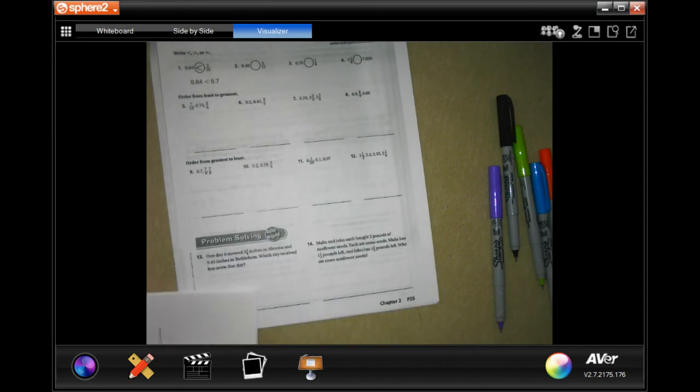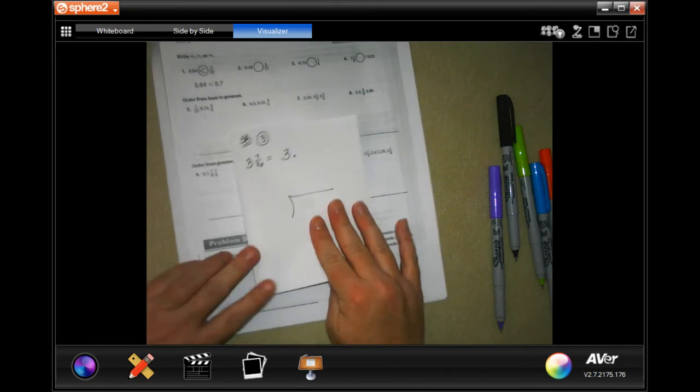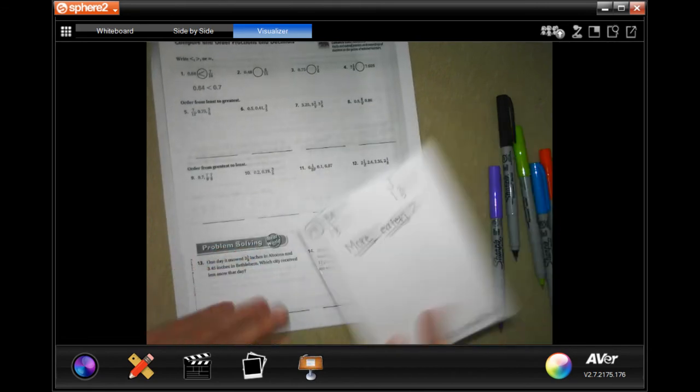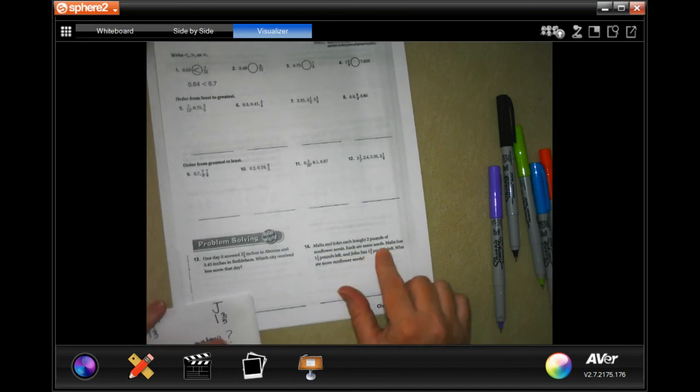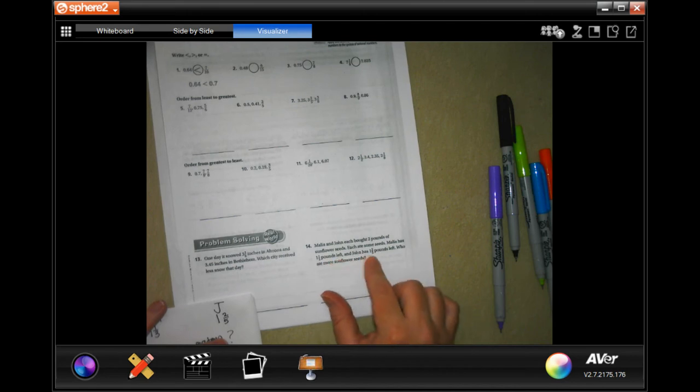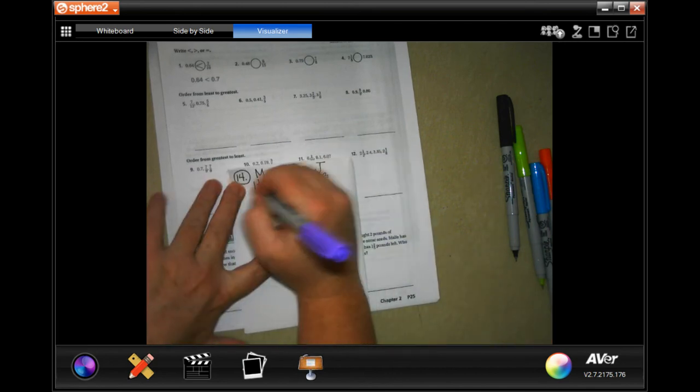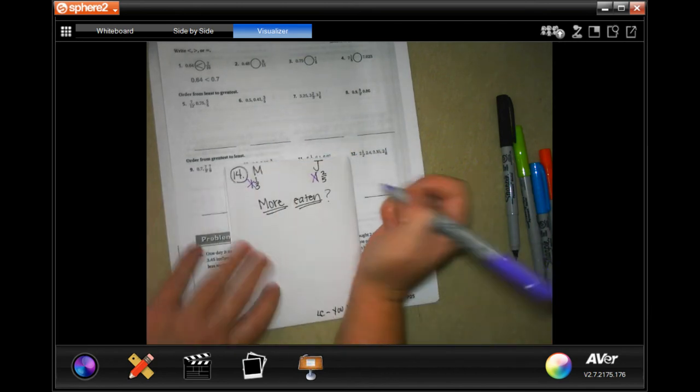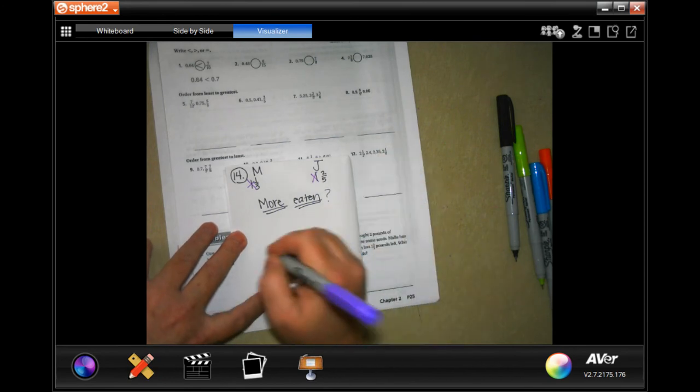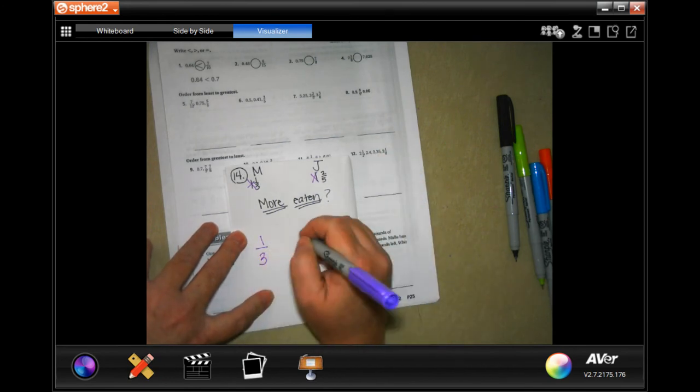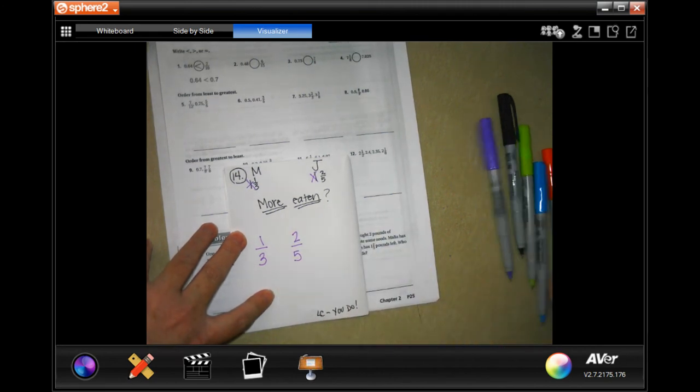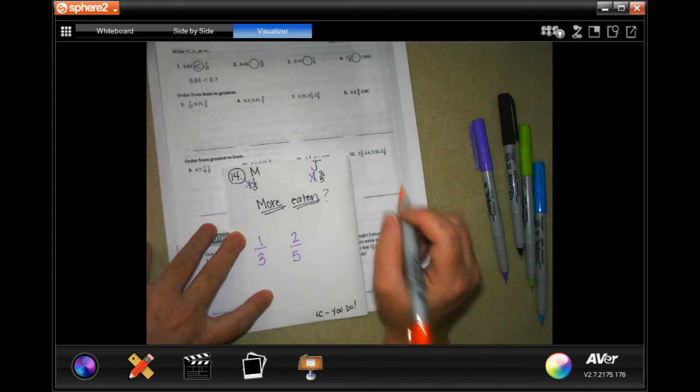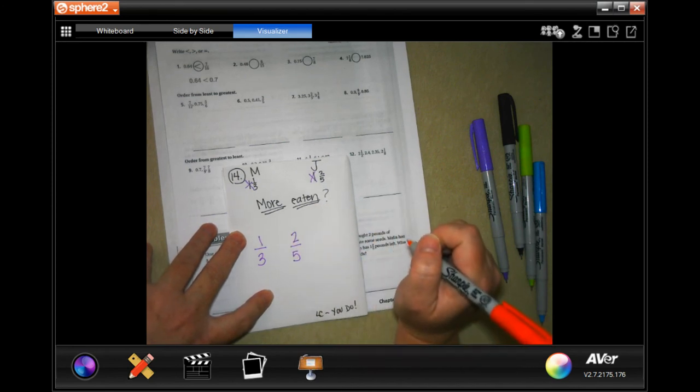Go to number 14. Number 14 says Malia and John each got 2 pounds of sunflower seeds. Each has some seeds. Malia has 1 1/3 pounds left and John has 1 2/5 pounds left. So, who ate more sunflower seeds? So again, they both start with 1. I don't want to deal with that. So, now, I'm going to show you a fun little trick if you have two fractions that are small so you don't have to do giant ones for you to see which one is bigger.